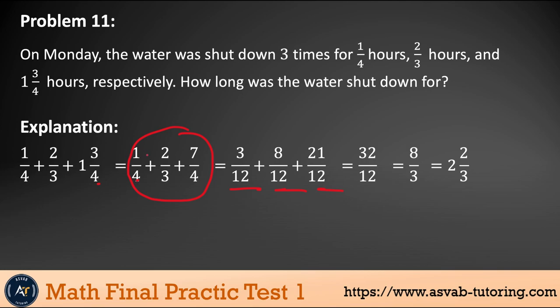Now you have to find the equivalent fraction. Multiply by three because three times four is 12. Multiply that by four, that by four, that by three, that by three. That gives you three over 12, eight over 12 and 21 over 12. If you add them up, that gives you 32 over 12. If you reduce it, that gives you eight over three. If you make this improper fraction into a mixed number that gives you two and two thirds.